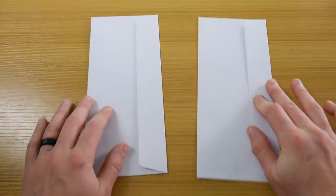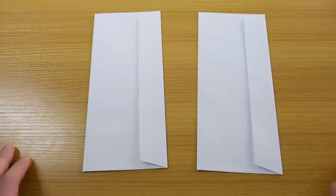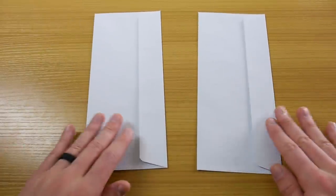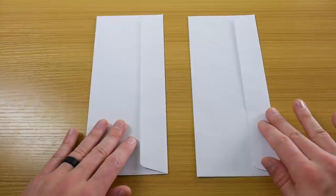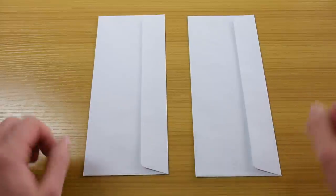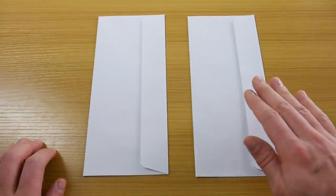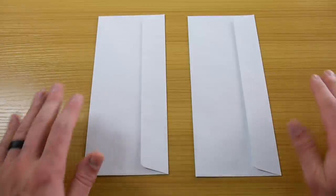Here are two envelopes, each containing money. You can have one, and it's your choice between the two. You don't know how much money is in the envelopes, but I will tell you one envelope has twice as much money as the other.